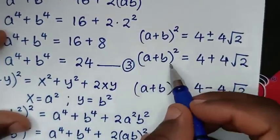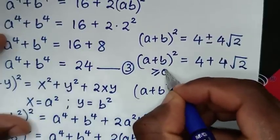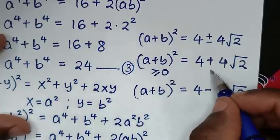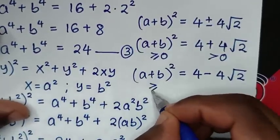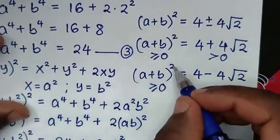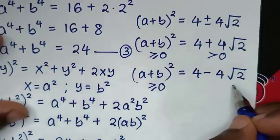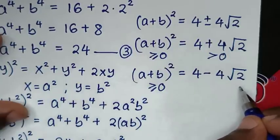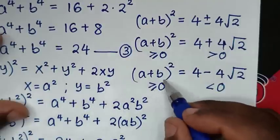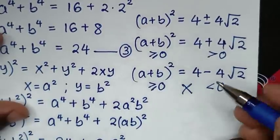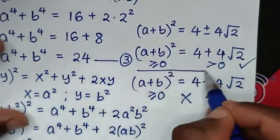Now, since (a + b)² must be greater than or equal to zero, we check both solutions. The value 4 plus 4√2 is greater than or equal to zero, so it is valid. But 4 minus 4√2 is less than zero — since √2 is approximately 1.414, this value is negative — so this solution is not possible. We continue only with the first solution.